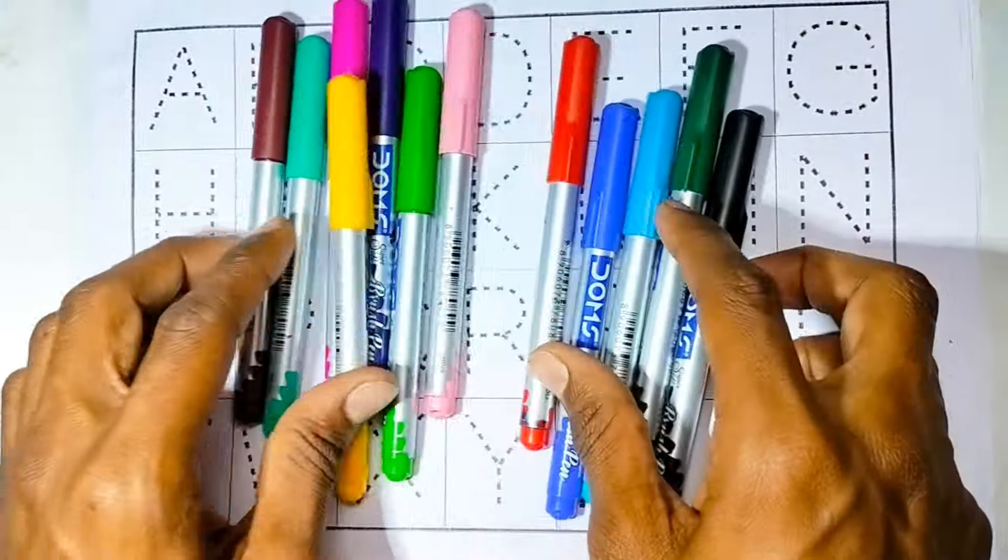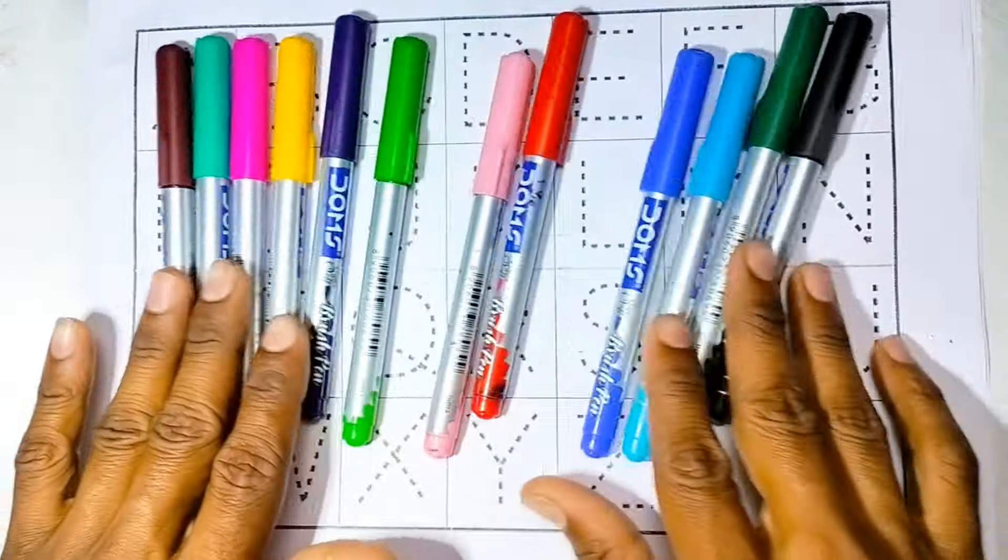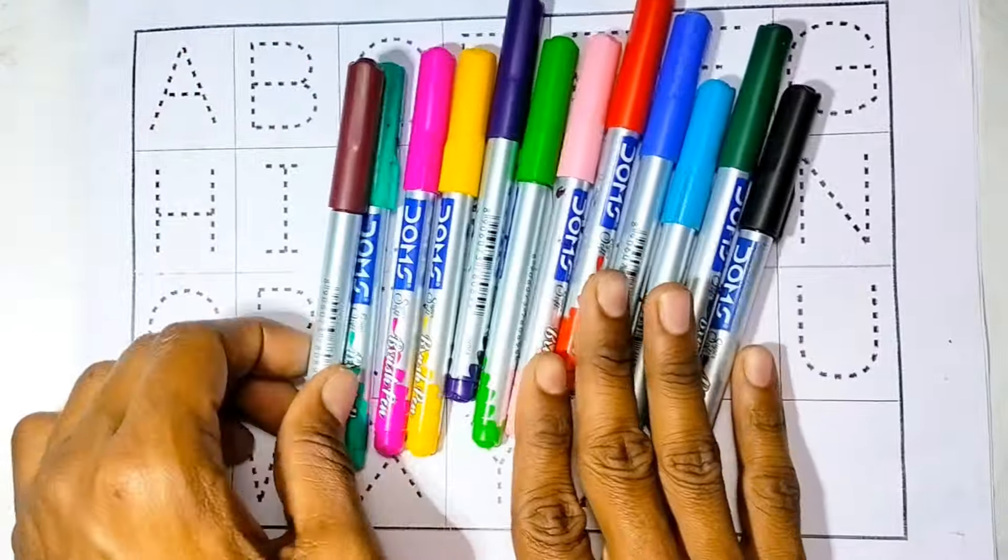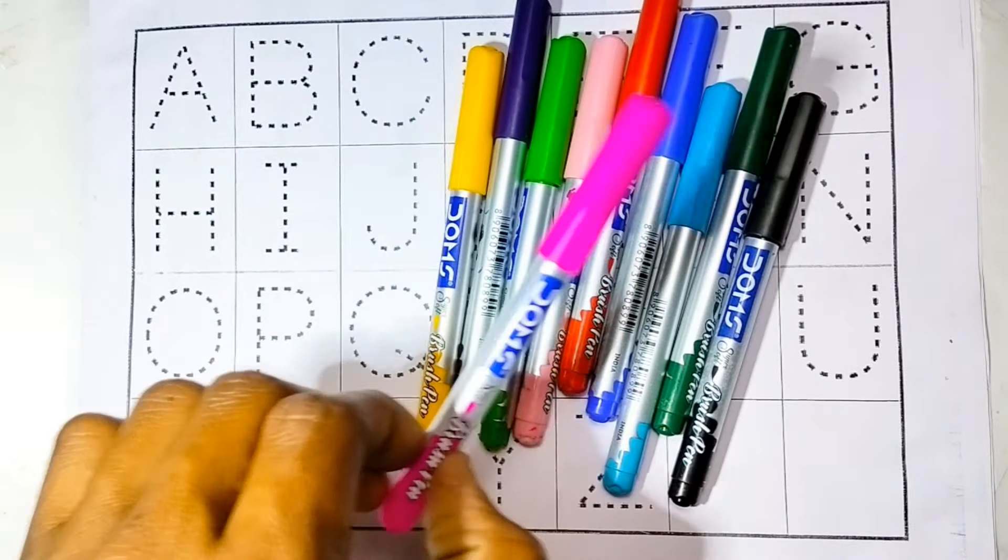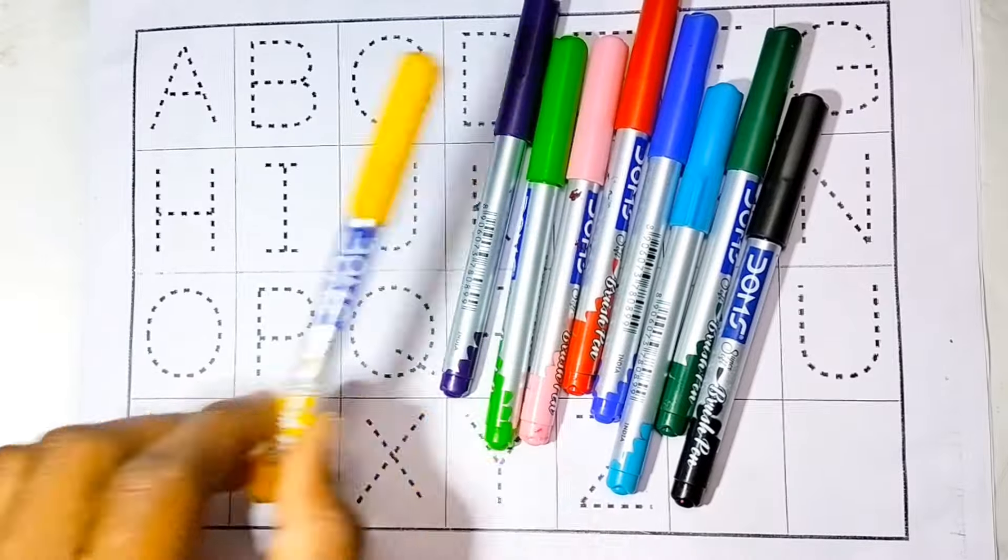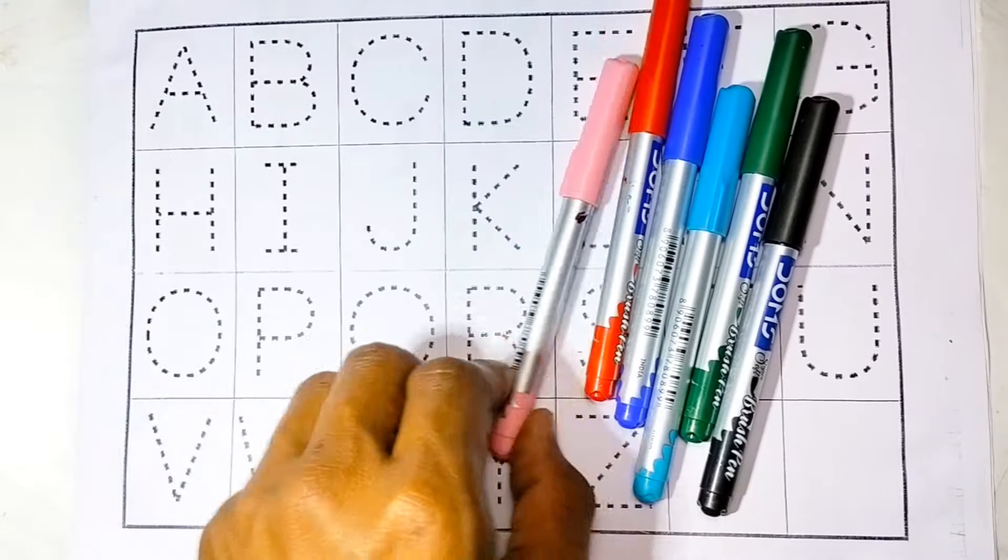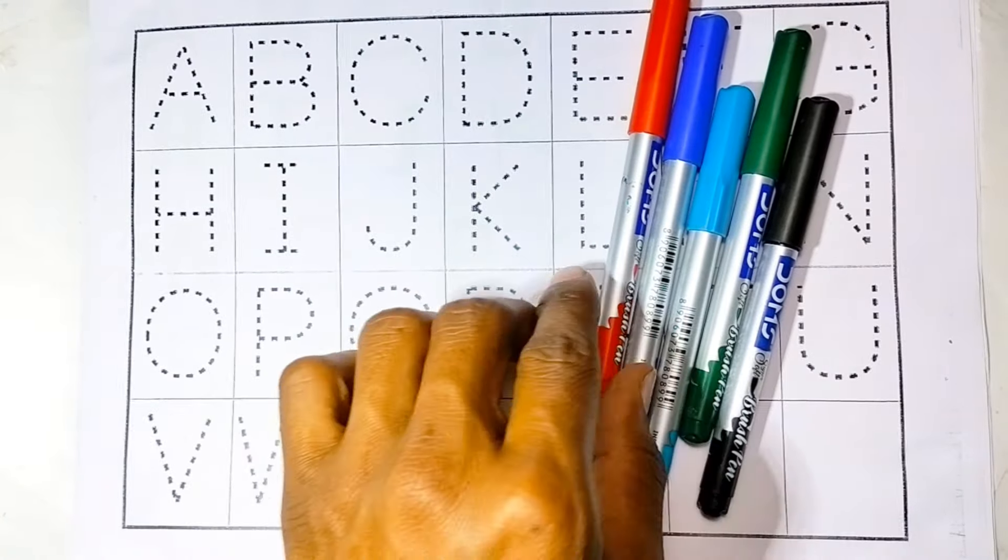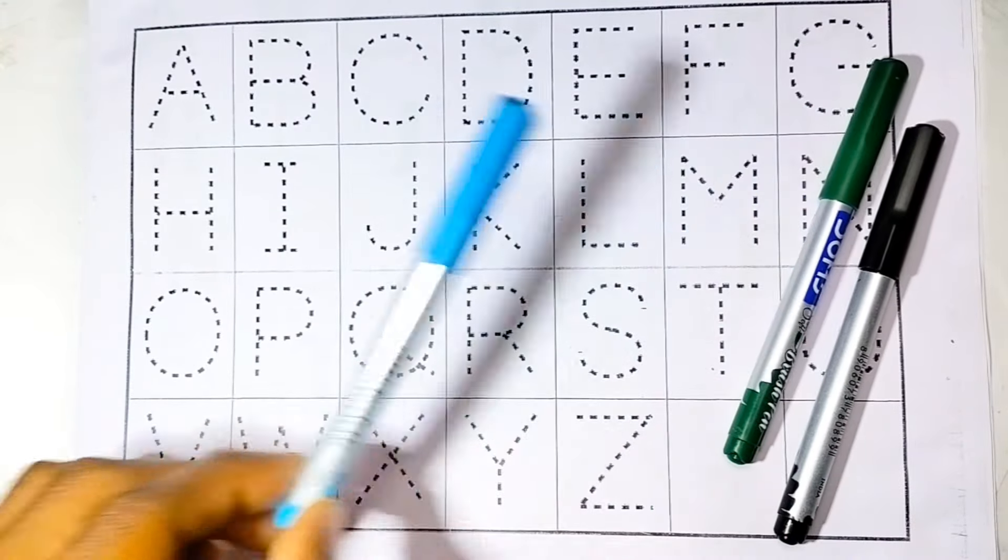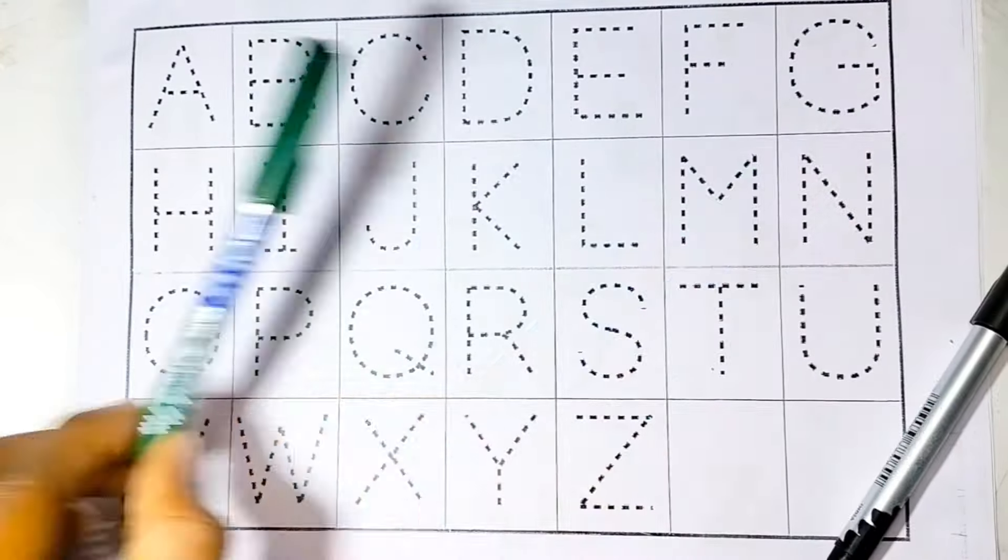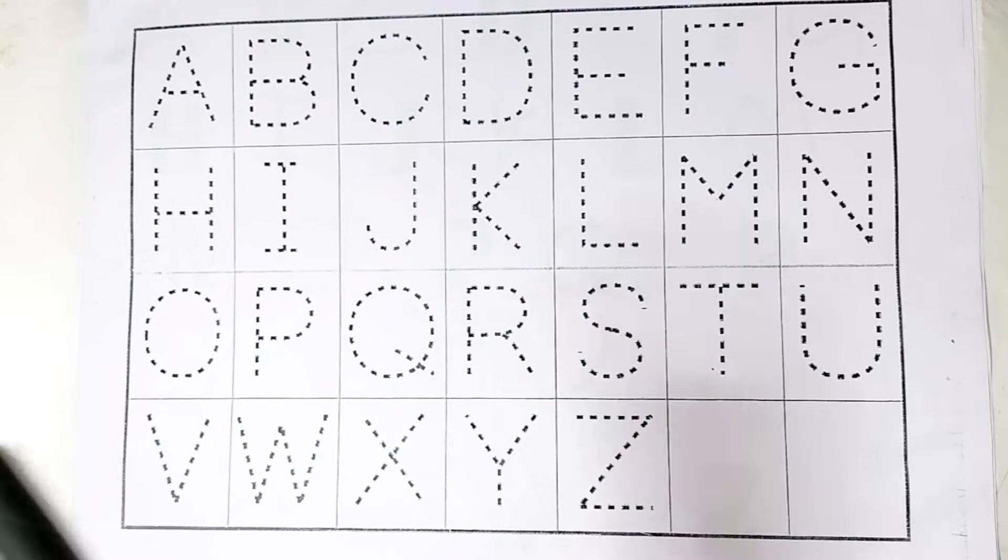Hello kids, welcome to this channel. So today we will learn about alphabet A to Z and learn some colors. Let's start: brown color, slaty color, pink color, yellow color, purple color, green color, light pink color, red color, blue color, sky blue color, dark green color, black color.